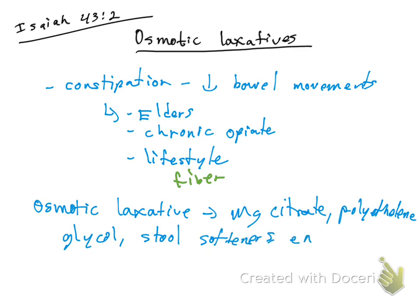Or an enema. Some of those come in liquid form — magnesium citrate, polyethylene glycol, and stool softeners are liquid — while the enema goes through your rectum, so it is not taken orally.